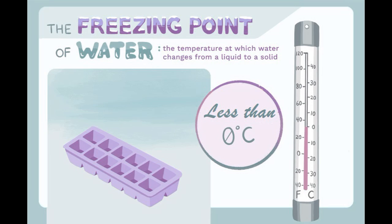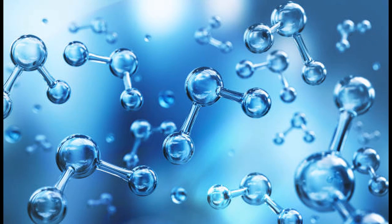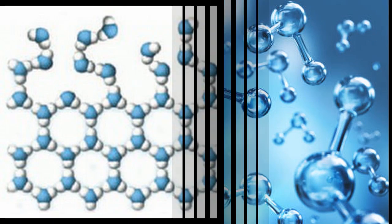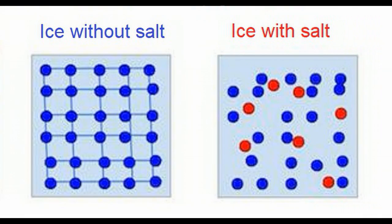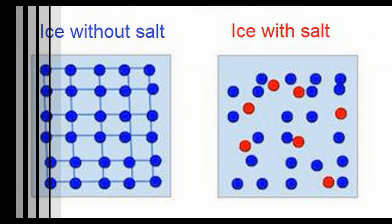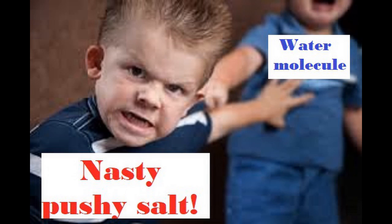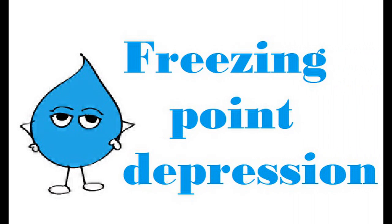So fresh water freezes at less than zero degrees Celsius. Free flowing water molecules get trapped into an organized crystal structure, and this is how ice is formed. Salt disrupts this process because salt particles move around and push water molecules apart again. This is called freezing point depression.